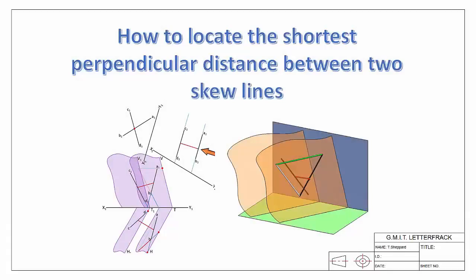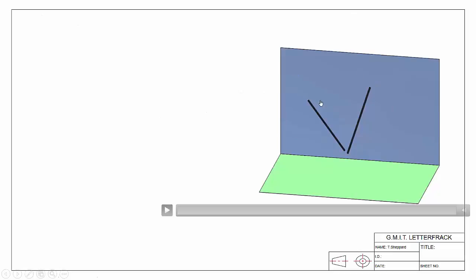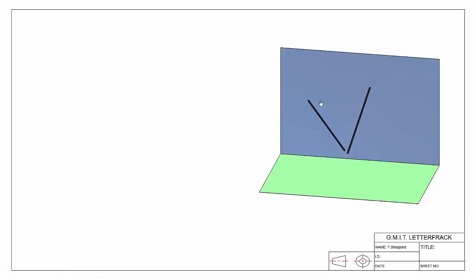Hello and welcome back to our webcast series on the topic of plane and descriptive geometry. In this video we're going to look at how to locate the shortest perpendicular distance between two skew lines. We'll begin by looking at a setup, going through the concept and procedure, and then look at a 2D setup like what you'll have on your drawing sheet and go through the stages of how to solve that.